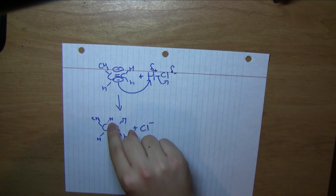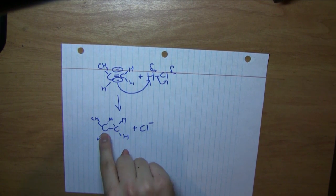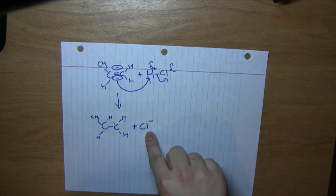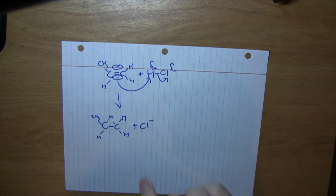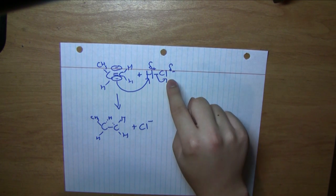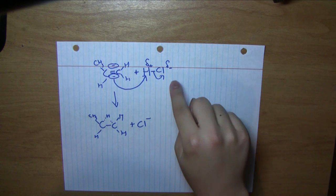In which you have a proton partially bonded between both carbons from the double bond, and you have the anion, the Cl- or halide, resulting from both electrons from the H and halide bond going towards the halide.